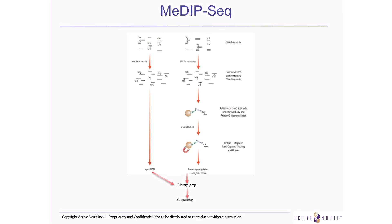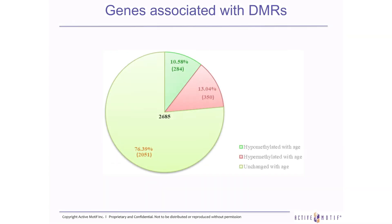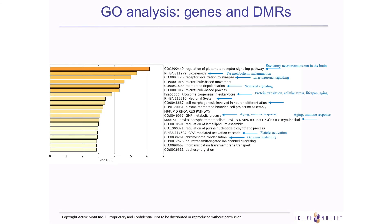To more precisely identify which regions are differentially methylated during aging, we performed the MeDIP experiment. The protocol is straightforward: we fragment the DNA, denature for 10 minutes at 95°C, then use a specific antibody against 5mC methylation to pull down, perform library preparation, and sequence. As a result, we see that roughly 10% of genes are hypomethylated during aging and 30% are hypermethylated during aging. Closer examination reveals that many of these genes are involved in immune response, aging response, and chronic inflammation — as expected.